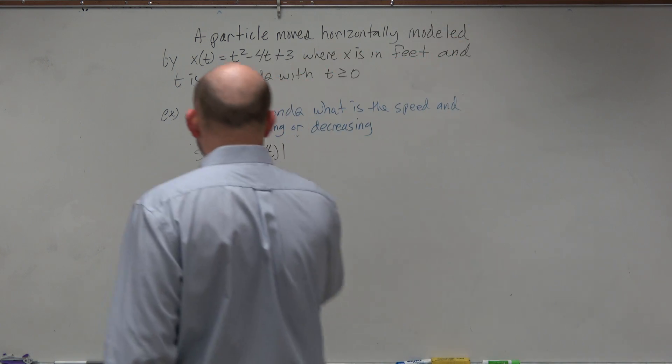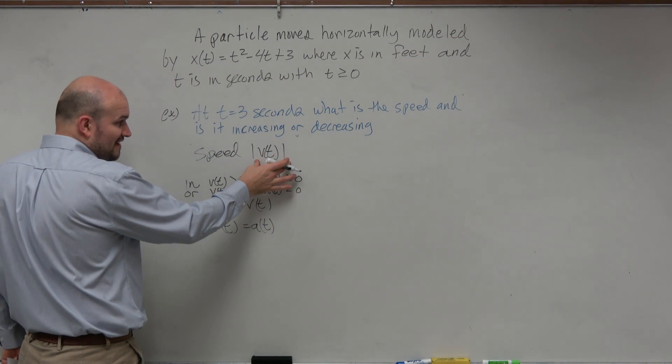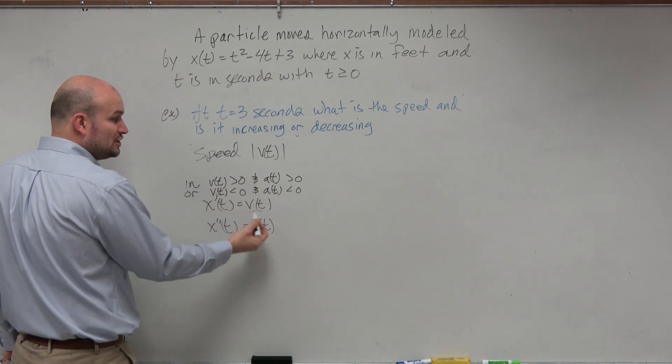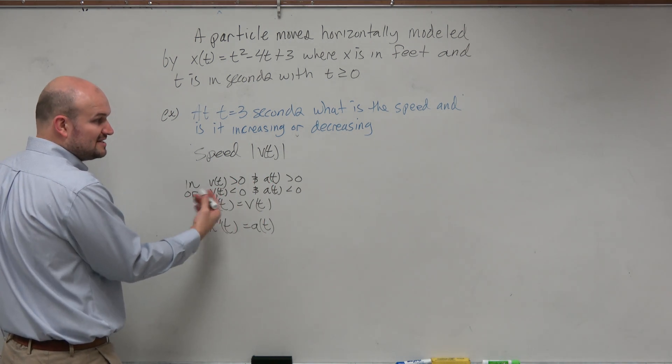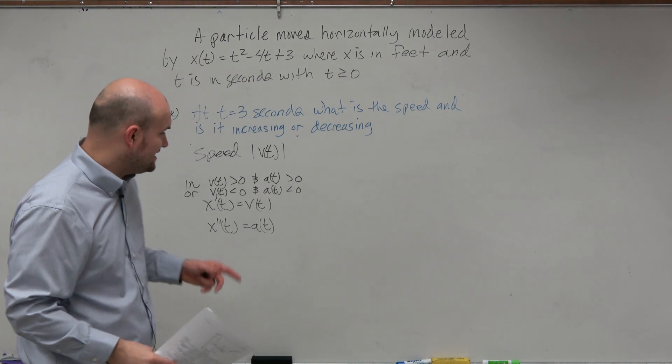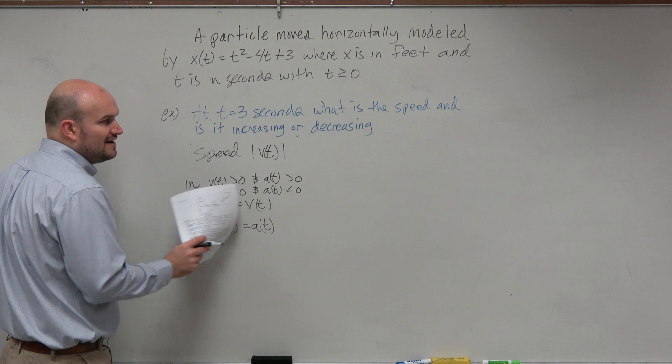So just remember that the speed is the absolute value of your velocity. And then whenever the signs for velocity and acceleration are the same, then we know that the speed is increasing. If they are opposite signs, then we know the speed is going to be decreasing.